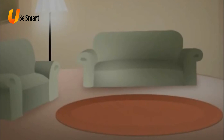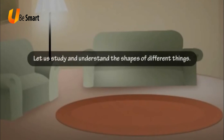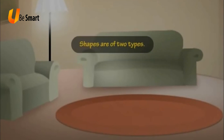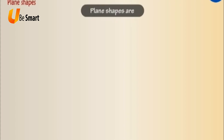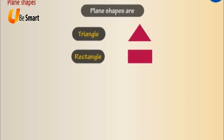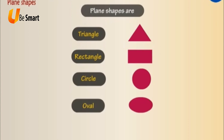Kinds of Shapes. Let us study and understand the shapes of different things. Shapes are of two types: Plane shapes and Solid shapes. Plane shapes are triangle, rectangle, circle, oval and square.